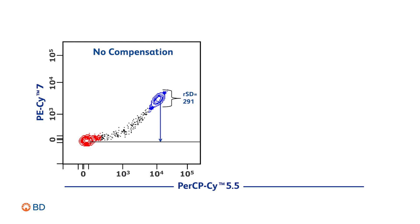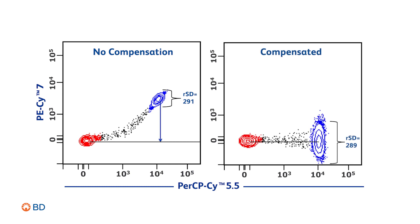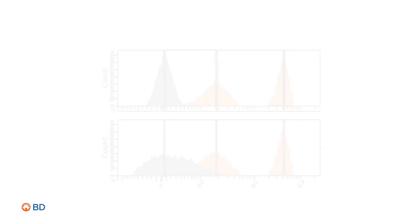To help mitigate these effects, we use the process of compensation, which can eliminate the background. However, the increased spread remains. Spread due to spillover can have significant impact when resolving dim from negative populations, which is critical to good panel design.